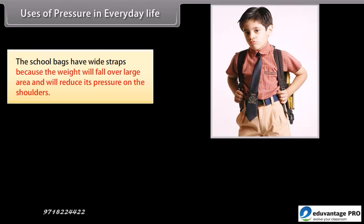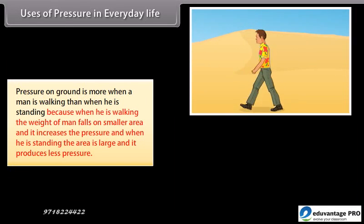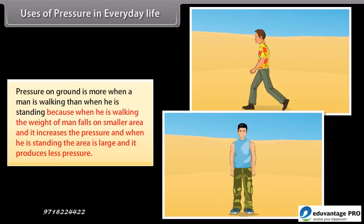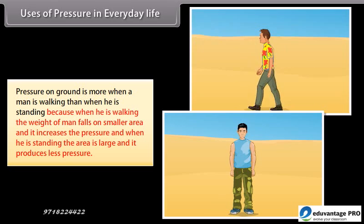Uses of Pressure in Everyday Life: School bags have wide straps so that the weight falls over a large area and reduces pressure on the shoulders. The tip of a needle is sharp so that it puts force on a very small area of cloth, producing enough pressure to pierce it. Pressure on the ground is more when a man is walking than when standing, because walking concentrates weight on a smaller area, increasing pressure.